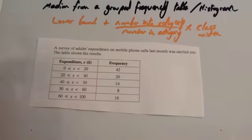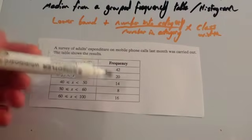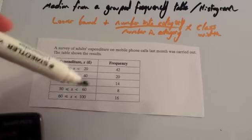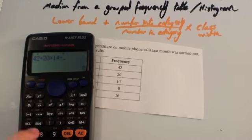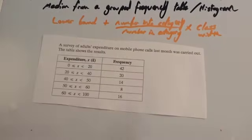Since this is an estimate of the median, let's work out how many people there are all together. So we're going to add this up here. So 42 plus 20 plus 14 plus 8 plus 16. So there's 100 people all together.